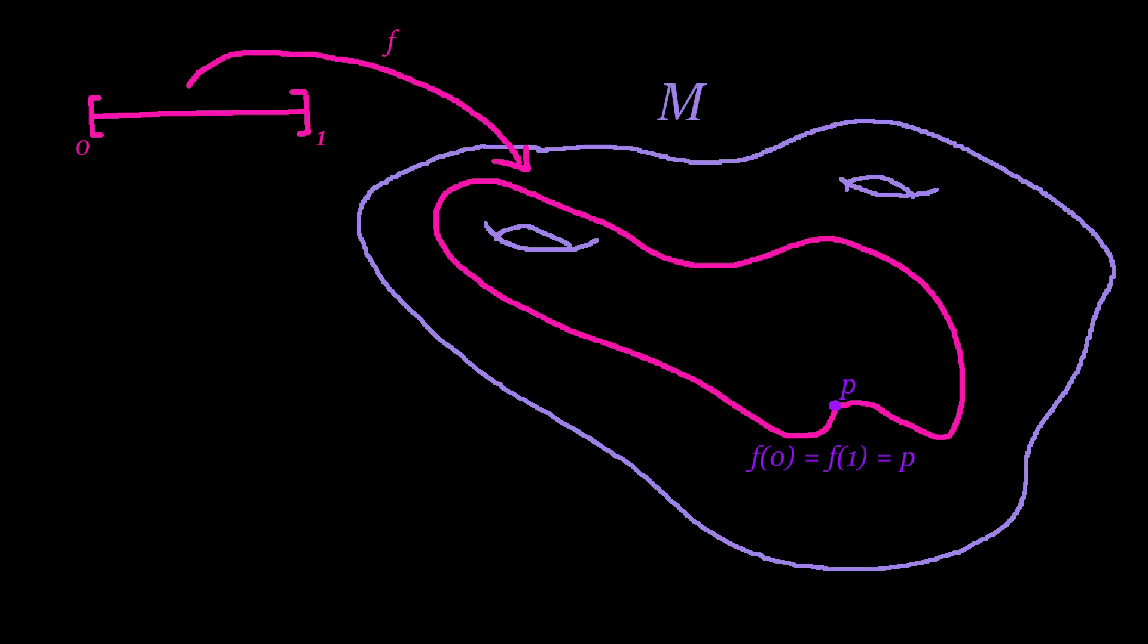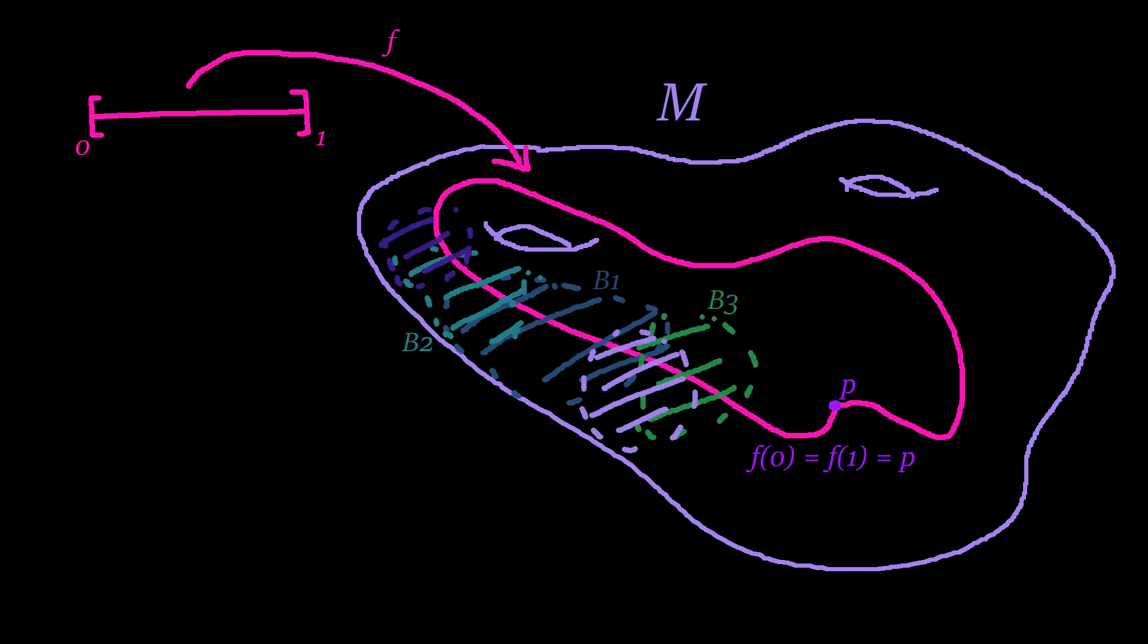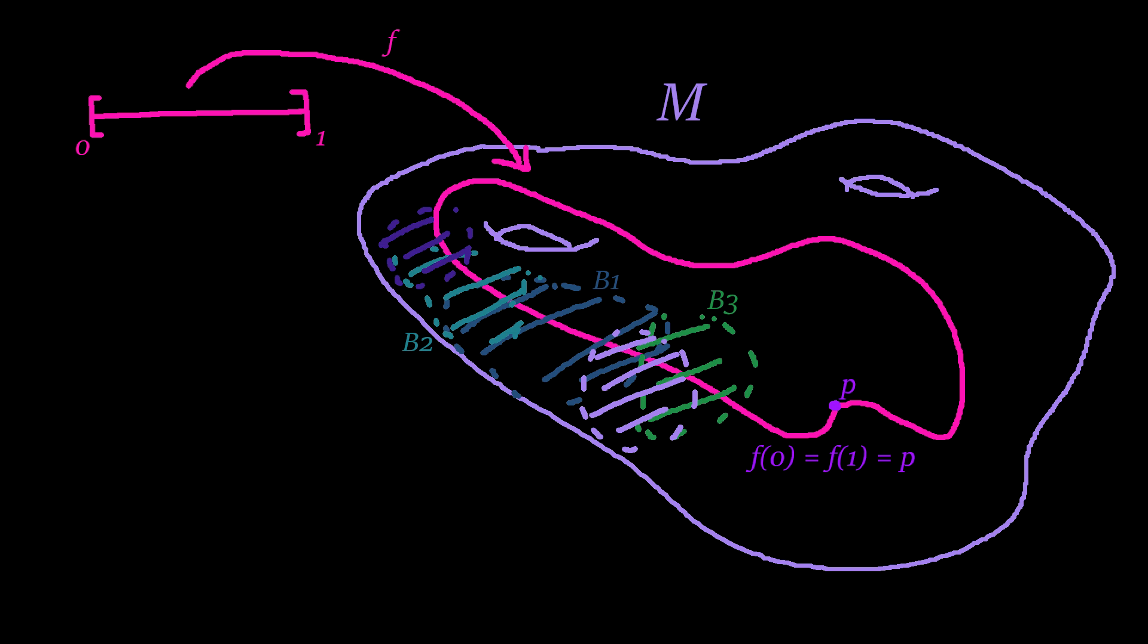Suppose we now have a path in our manifold M. We recall that a path is a continuous function from the compact interval [0,1] to M. We will call our path F. We now consider a cover of coordinate balls of M from before, and we observe that taking the pre-images of these balls with respect to our path F will yield an open cover of the interval [0,1].